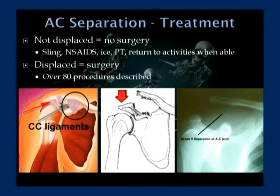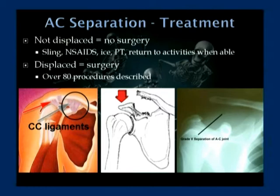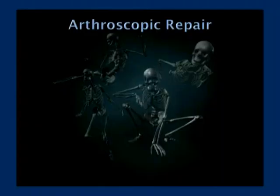If the separation is minimally displaced, a sling is sufficient. If it's more displaced, we typically need to fix it — the more displaced injuries do not do well unless repaired. There are over 80 procedures described for this injury, and in orthopedics, if there are 80 procedures, it usually means none of them are very good. However, over the last three to four years, newer arthroscopic techniques have been developed that provide a much more favorable surgical result.